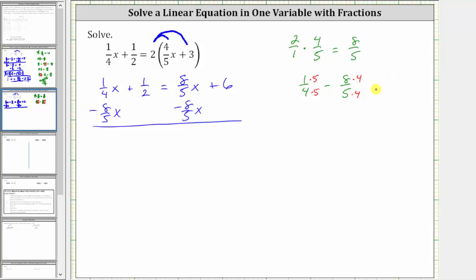Notice now we do have a common denominator of 20, and the numerator is now 5 minus 32, which is negative 27. So this difference here is negative 27/20 x. And we still have plus one-half equals on the right, this difference is zero, and we still have six.